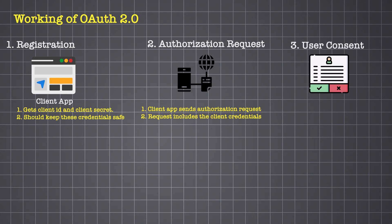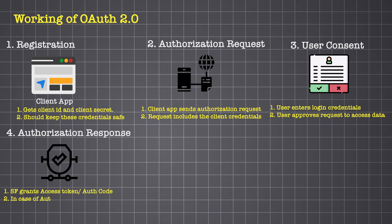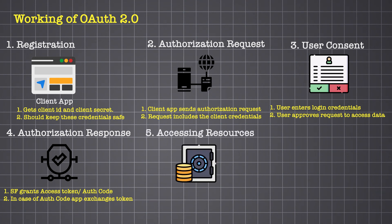The user, also known as the resource owner, is redirected to a Salesforce login or consent screen. If they approve the request, the authorization server proceeds depending on the OAuth flow being used. Salesforce responds with either an access token or an authorization code, which the app exchanges for a token. Sometimes a refresh token is also included, allowing the app to get new access tokens without asking for user consent again.